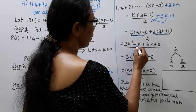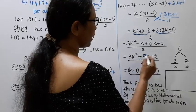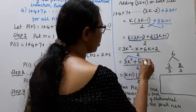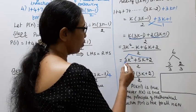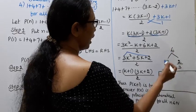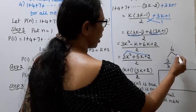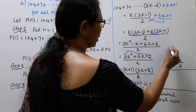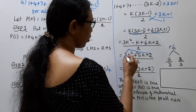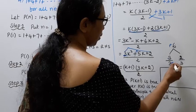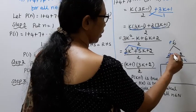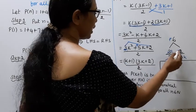3K square minus K plus 6K plus 5K plus 2 divided by 2. Now we can factorize: 3 into K square coefficient, 3 into 2 is 6. Sum 3 plus 2 is 5. Now if we factor, K plus 1 times 3K plus 2 divided by 2.